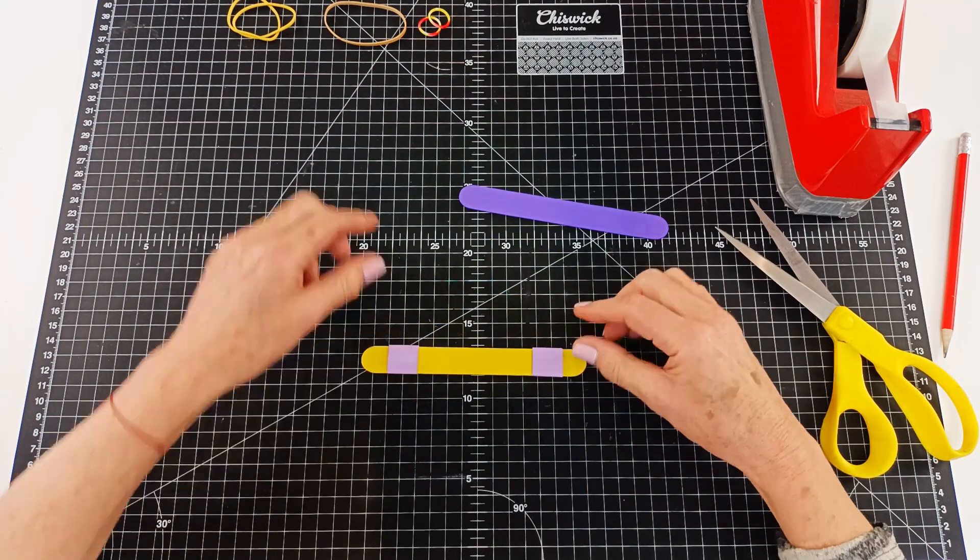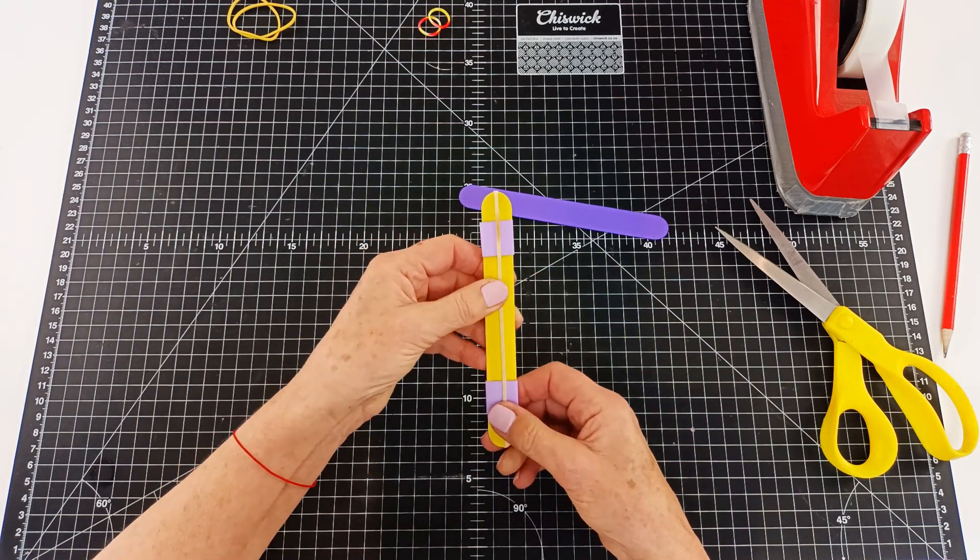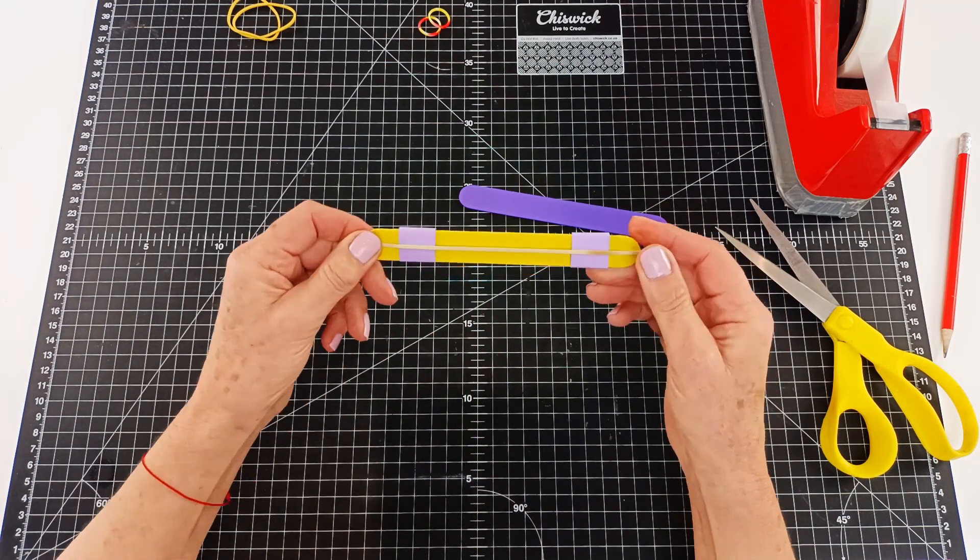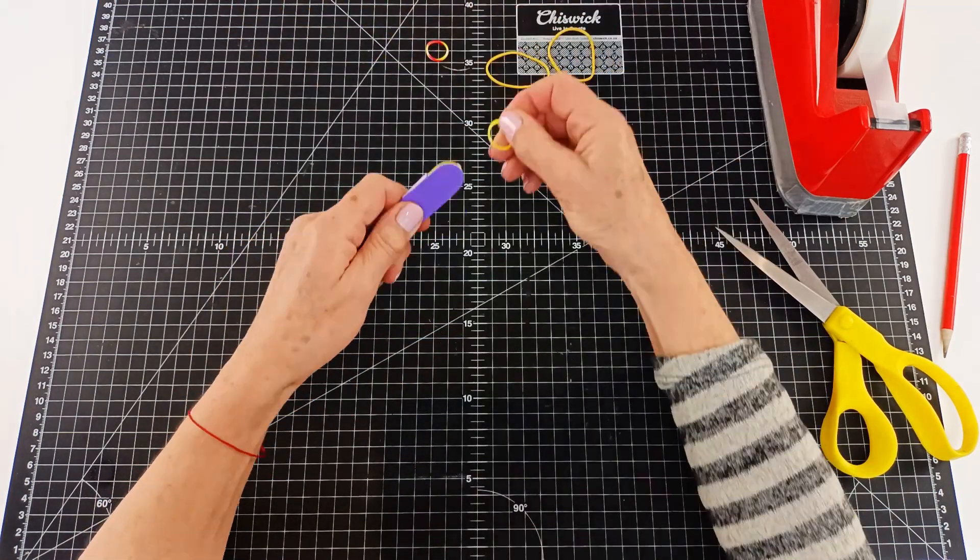So now we just have the one craft stick with the two pieces. We're going to take a longer elastic and put it lengthwise across the entire craft stick over top of those papers and then add the other craft stick back.